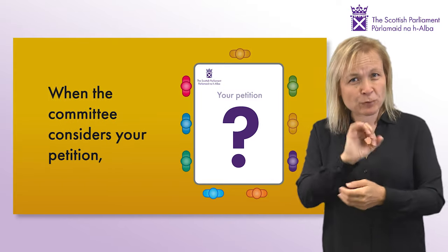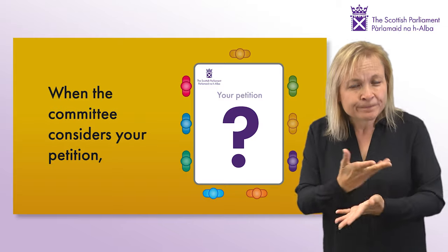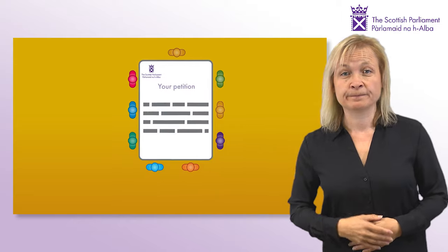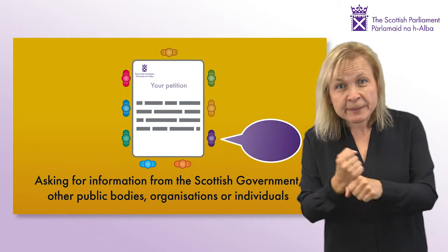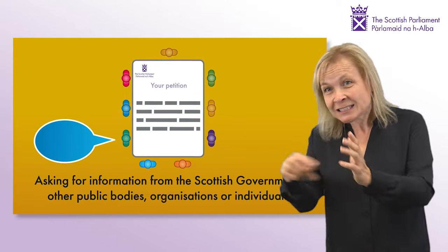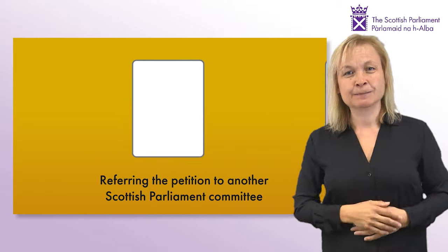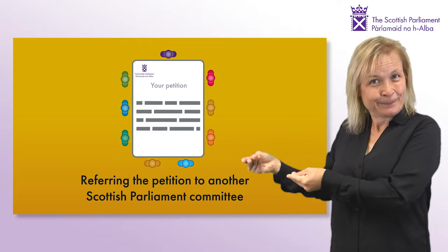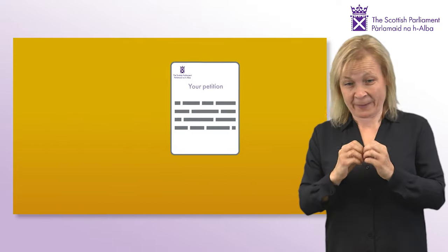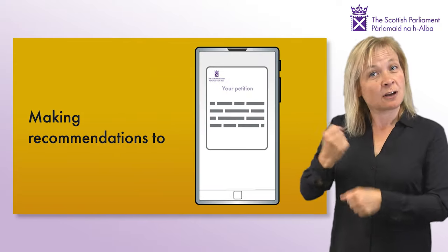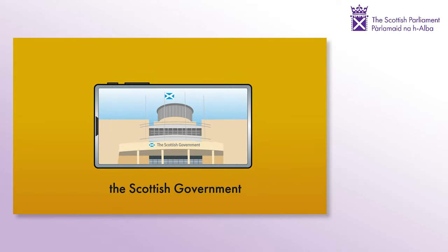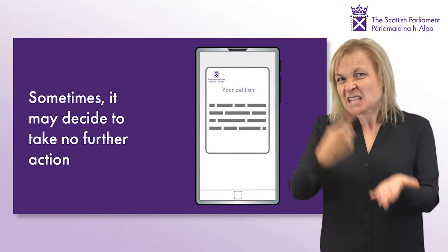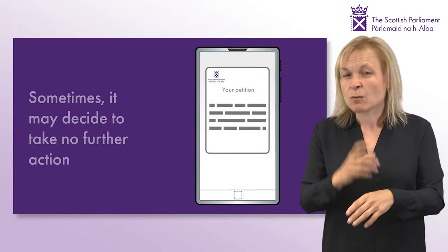When the committee considers your petition, it will decide what action it wishes to take. This may include asking for information from the Scottish Government, other public bodies, organisations or individuals; referring the petition to another Scottish Parliament Committee; or making recommendations to the Scottish Government. Sometimes, it may decide to take no further action and close the petition.